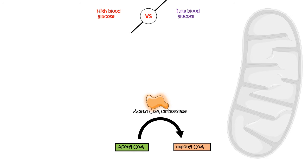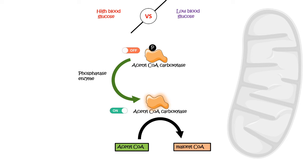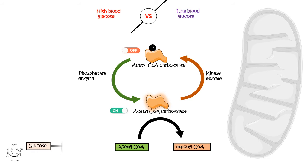The key enzyme acetyl-CoA carboxylase exists in two forms: a phosphorylated form, which is the deactivated form, and a dephosphorylated form, which is the active form. These two states can be interconverted with the help of several enzymes — it can be dephosphorylated and activated by phosphatase enzymes, and phosphorylated and deactivated by kinase enzymes. From a bird's-eye view, all hormones ultimately modulate these phosphatase or kinase enzymes to regulate acetyl-CoA carboxylase activity.